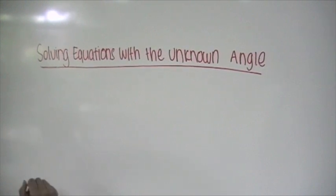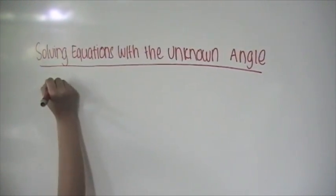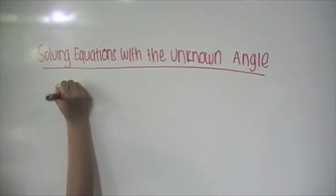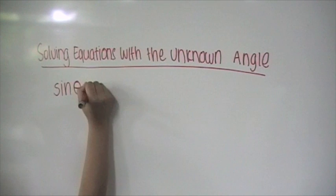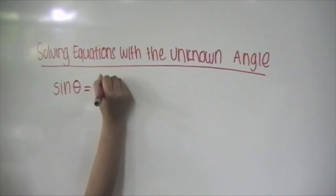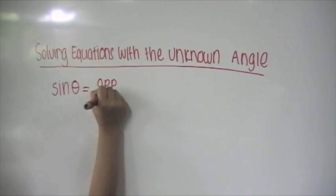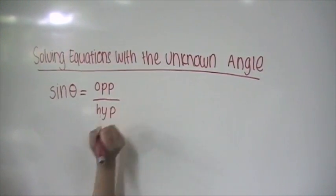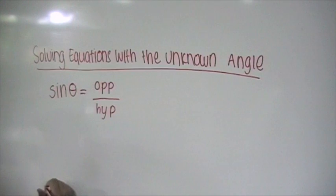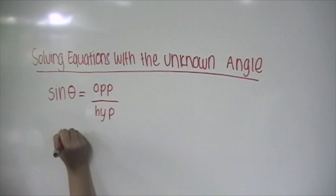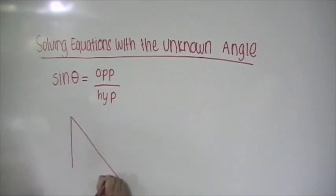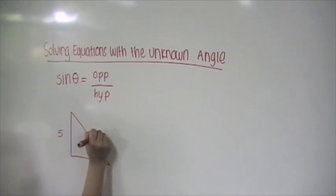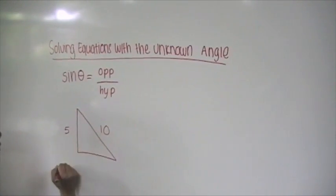Solving equations with the unknown angle. In order to solve the equation with the unknown angle, we are going to use the trigonometric ratio sine, because sine theta equals opposite over hypotenuse. In this triangle, we are only given the hypotenuse and opposite, so we use the ratio sine.